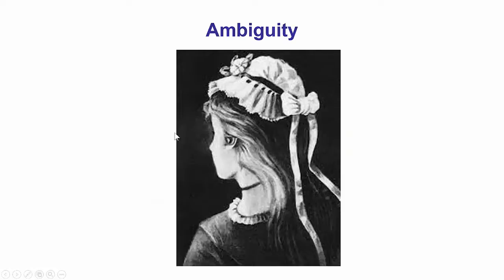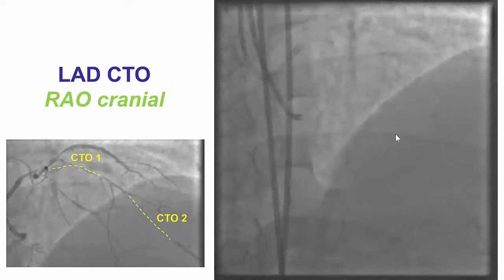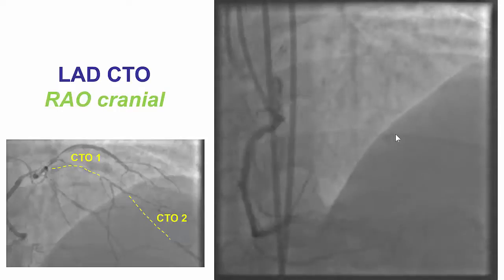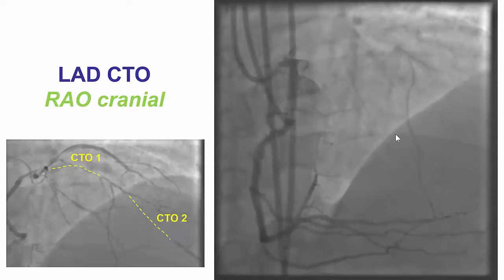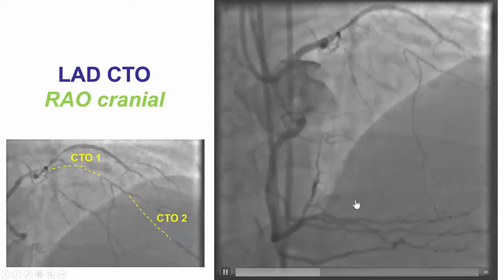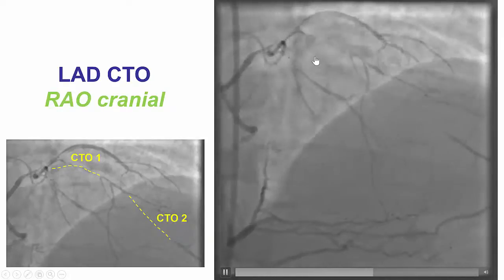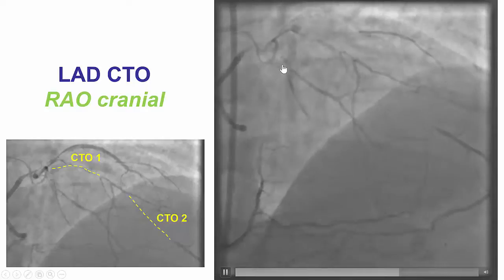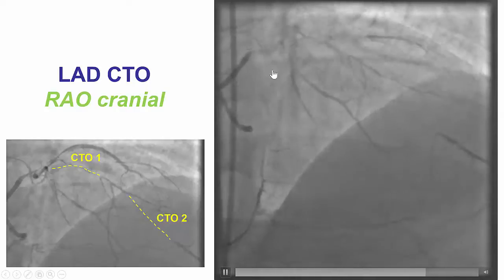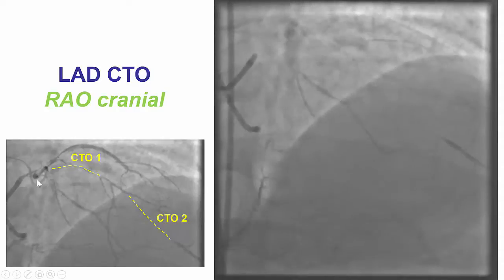This is a picture that shows for some people a young lady, and for others an older lady. Ambiguity is something fairly common in CTO-PCI and there are several ways to resolve it, including use of the retrograde approach. The patient had an LAD CTO — it was actually a two-level CTO.